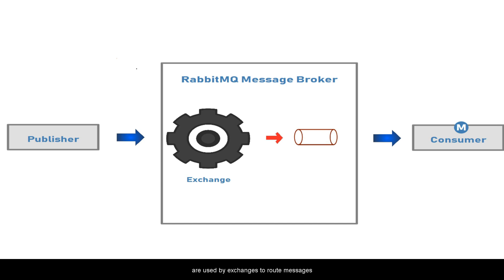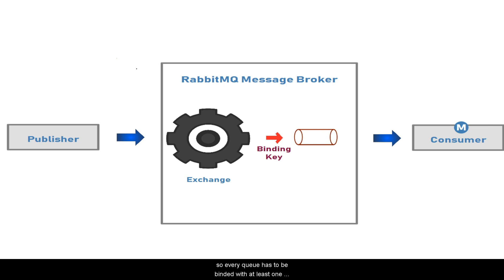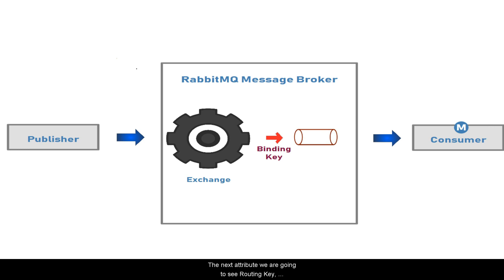Before we dive into types of exchanges, I want to introduce a couple of attributes in RabbitMQ which are used by exchanges to route messages. The first attribute is the binding key. This will be created when we bind an exchange with a queue. Note that every queue we create has to be bound to some exchange, else the messages published to that exchange will be lost forever. So every queue has to be bound with at least one exchange, and a binding key will be created for each binding between a queue and exchange.